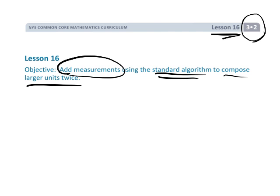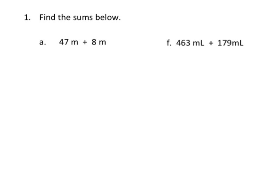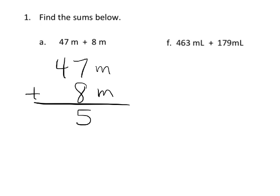Alright, so we got a couple examples on this page. Find the sums below and we're going to use that standard algorithm. So we've got 47 meters and 8 meters and we're going to add these together. So 7 plus 8 is 15, so that's going to be a 5, carry the 1. And I'll carry the 1 down here this time instead of, sometimes traditionally we would carry the one way up at the top.